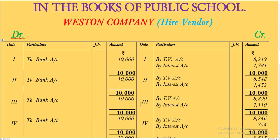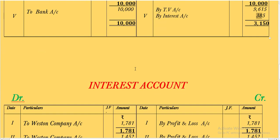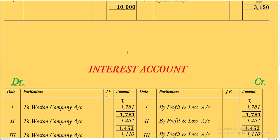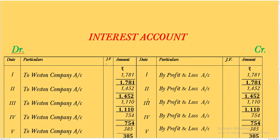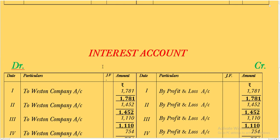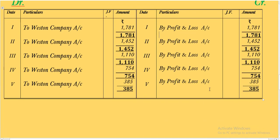The vendor account is now closed. The TV account you can make yourself — it is straightforward using the diminishing balance method for depreciation. For the interest account: when interest becomes due, the journal entry is — TV Account DR, Interest Account DR, to Western Company Account. The interest amount is recorded, and then transferred to Profit and Loss Account: Profit and Loss Account DR to Interest Account — because interest is an expense, it is debited to P&L as a nominal account.